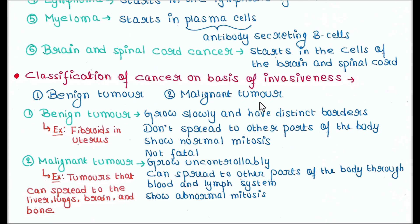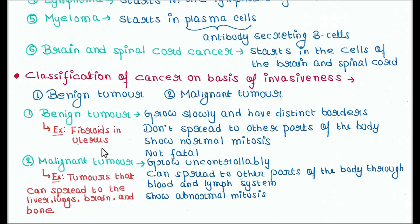The first is benign tumor. They grow slowly and have distinct borders. They don't spread to other parts of the body. They show normal mitosis and they are not fatal. For example, fibroids in the uterus.